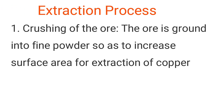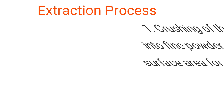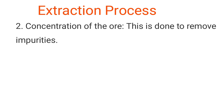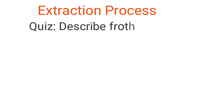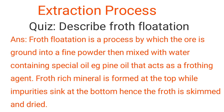The extraction process for copper begins with crushing of the ore. Crushing is done to increase surface area for extraction. The second step is concentration of the ore, done mainly to remove impurities by a process called froth flotation. In froth flotation, the ore is ground into fine powder, then mixed with water containing a special oil such as pine oil, which acts as a frothing agent. The froth, rich in mineral, forms at the top while impurities sink at the bottom. The froth is then skimmed and dried.